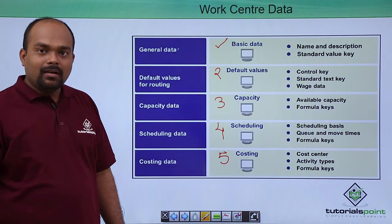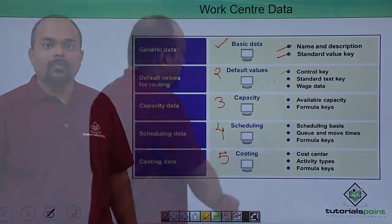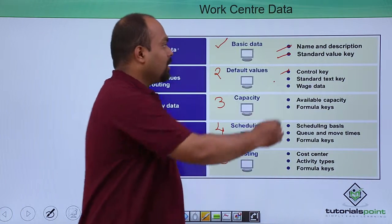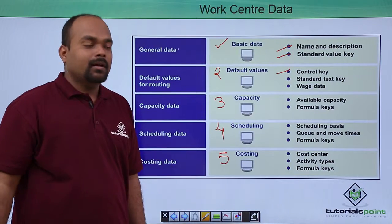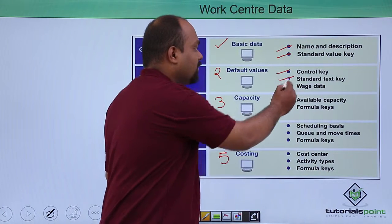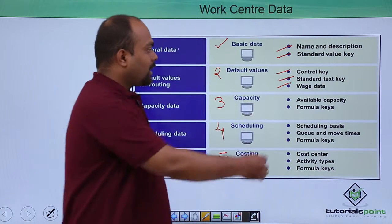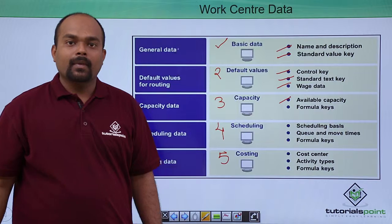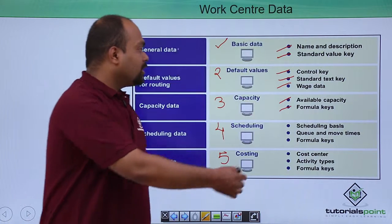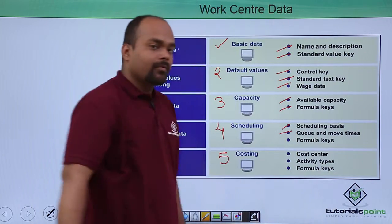In basic data, we put name, description, and standard value key. In default values view, we put a control key, a standard text key, and wage data. In capacity view, we put capacity available and a formula key. In scheduling view, we put scheduling basics, queue and move items, and formula key.